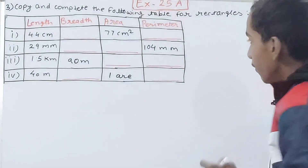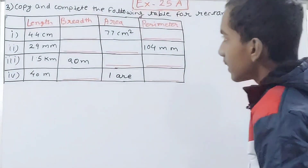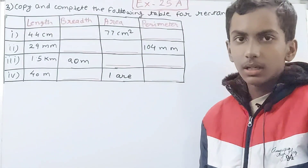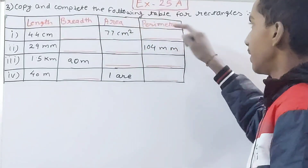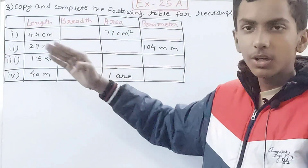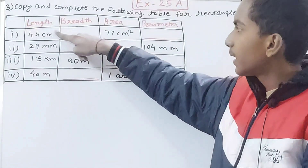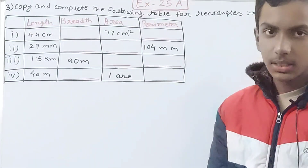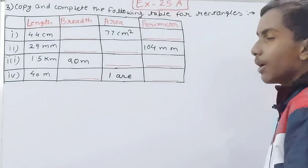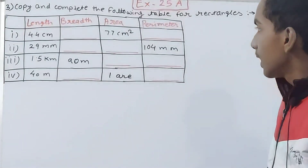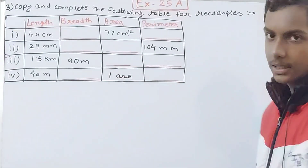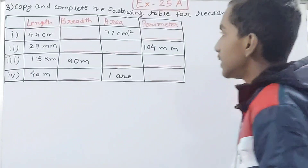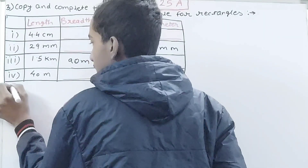We have to complete a table for rectangles. The table has four columns: length, breadth, area, and perimeter — and four rows, meaning four different rectangles. Different values are given for each rectangle, and we have to calculate the missing ones step by step.